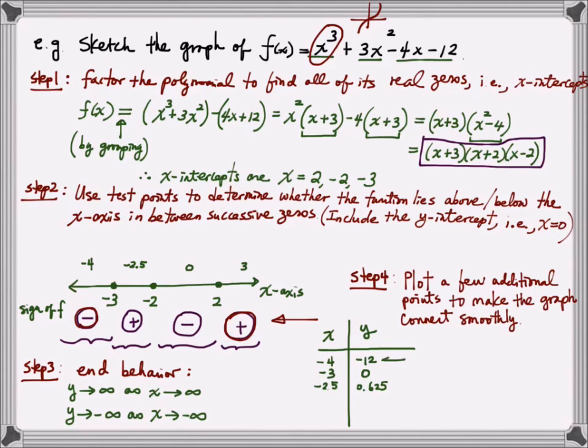The next zero is negative 2, which has the function value of 0. Next test point is 0, which has the function value of negative 12. 0 at 2. Function value is 0. Next test point, 3, has the function value of 30. These points should be enough to help us sketch the polynomial. Let's try it.